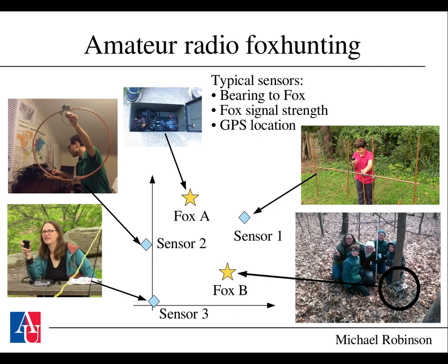This is frequently an activity done by amateur radio enthusiasts. Because they are always tinkering, there are a variety of sensors typically deployed on a given fox hunt. Some of these sensors can find bearings, some can find signal strength, some can find GPS location, and some find a mixture. This is a classic heterogeneous data fusion problem: given a variety of sensors, can you find where the fox transmitter has been hidden?